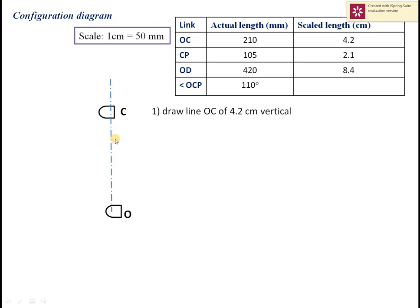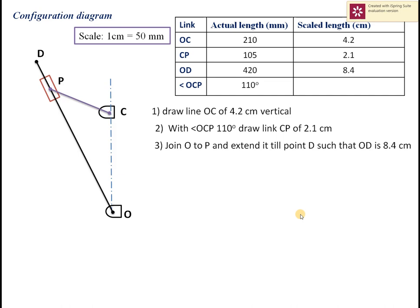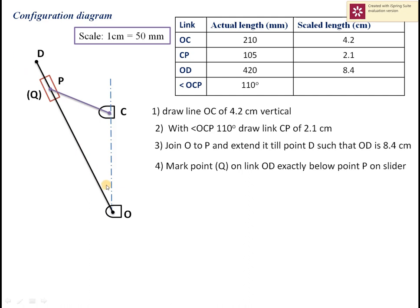Draw a vertical line OC of 4.2 centimeters. Then, with angle OCP equals 110 degrees, draw link CP of 2.1 centimeters. Then join points O and P and extend to point D such that length OD is 8.4 centimeters. This completes the configuration diagram. Since slider P slides on link OD and also rotates with it, we assume point Q on the rotating link OD which lies exactly below point P on the slider.